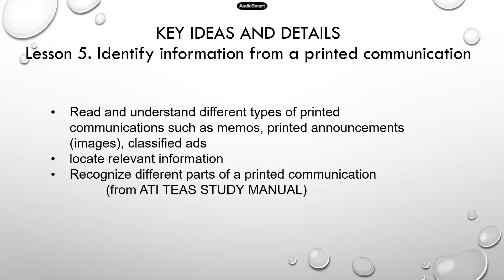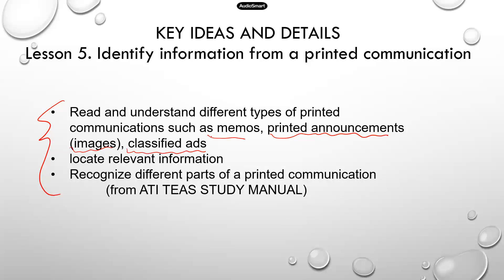Alright guys, today we are going to move on to Lesson 5: Identify Information from a Printed Communication. These are the learning objectives. You need to be able to read and understand the different types of printed communication. Examples are memos, printed announcements — and these announcements may have images where you have to extract information from — or classified ads, which can also be used as printed communications on the TEAS test.